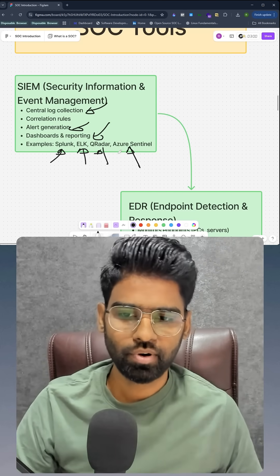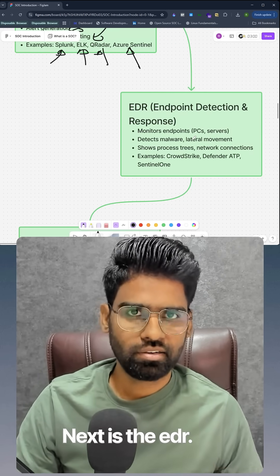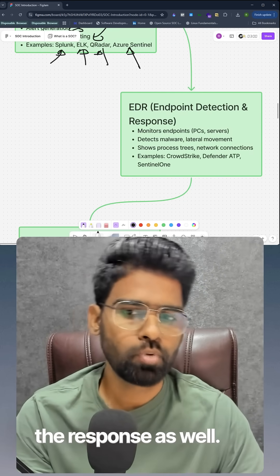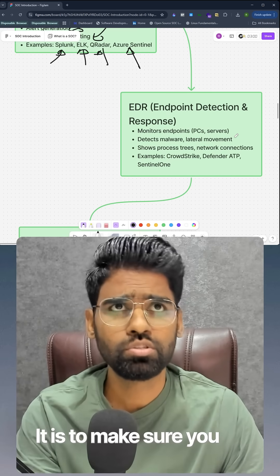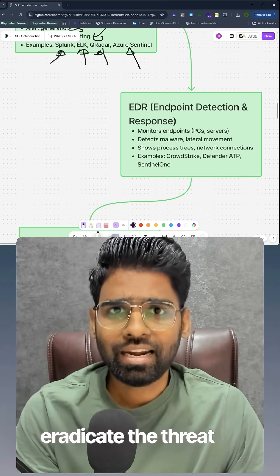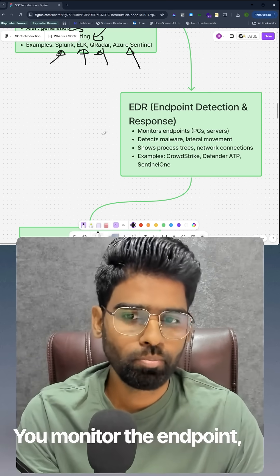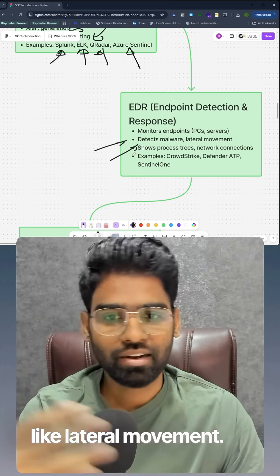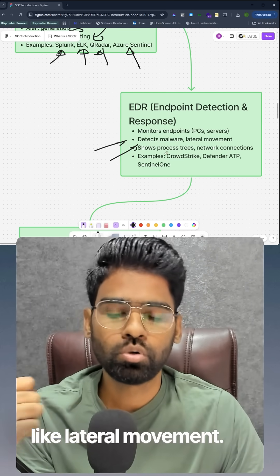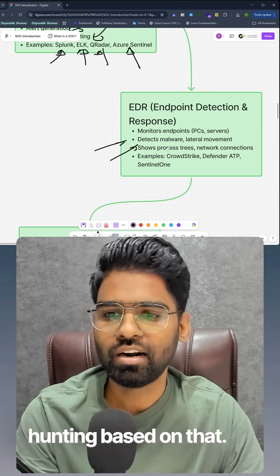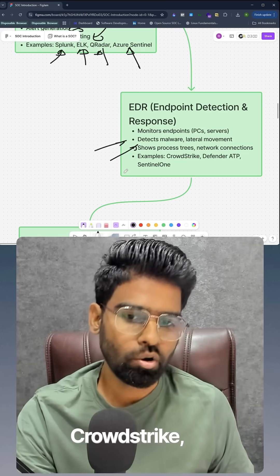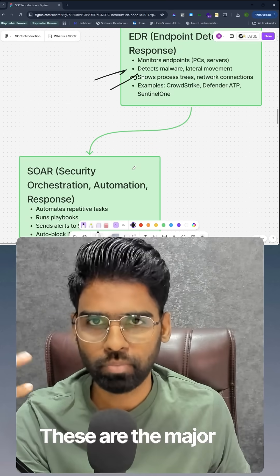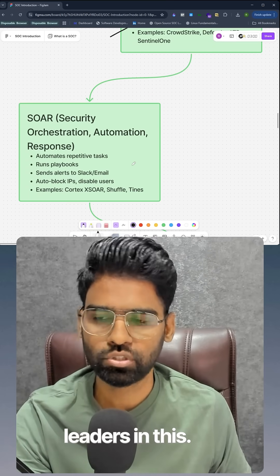Next is EDR, which is used to detect any threat on the endpoint and perform response as well. It ensures you eradicate the threat as soon as possible — you monitor the endpoint, detect malware, identify threats like lateral movement, and perform threat hunting. CrowdStrike, Microsoft Defender for Endpoint, and Sentinel are the major and popular leaders in this space.